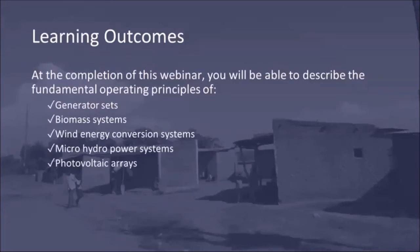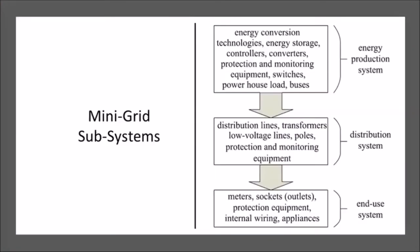The book covers many topics, and today's webinar is going to focus on three chapters in particular. It's challenging to cover three entire chapters in a 35- or 40-minute presentation, so I encourage you to check those chapters for example problems and more detail. Today's webinar will talk about the fundamental operating principles of the energy conversion technologies commonly encountered in off-grid systems in the range of perhaps 1 kilowatt to maybe 100 kilowatts in size.